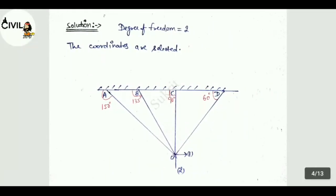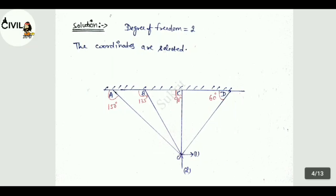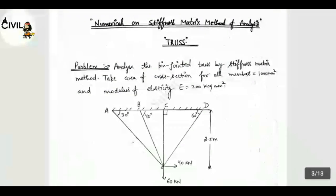Solution. First step, you have a degree of freedom to find out. Means N is equal to 2. The coordinates are selected. The coordinates are loaded in X or Y direction. You have to find out your angle. The angle given is inner angles: 30 degree, 45 degree, 90 degree and 60 degree.